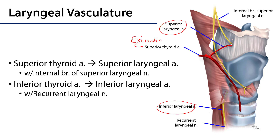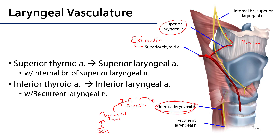The superior thyroid gives off the superior laryngeal artery. That superior laryngeal artery is transmitted through the thyrohyoid membrane, accompanied by the internal branch of the superior laryngeal nerve, which we'll discuss shortly. The inferior laryngeal artery is a branch of the inferior thyroid artery. That inferior thyroid artery is a branch of the thyrocervical trunk, which arises from the first part of the subclavian artery.